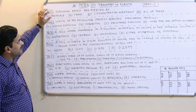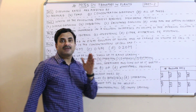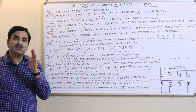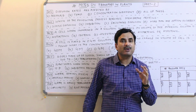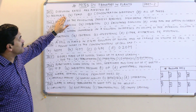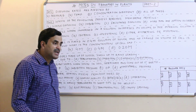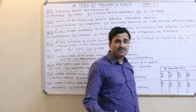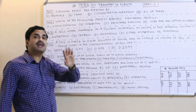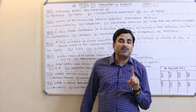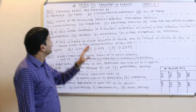Question number 1: Diffusion rates are affected by which factors? Diffusion is a process where substances move from high concentration to low concentration. The movement can occur for liquids, solids, or gases. The first factor affecting diffusion rate is pressure. Diffusion is directly proportional to pressure — more pressure, more diffusion; less pressure, less diffusion.